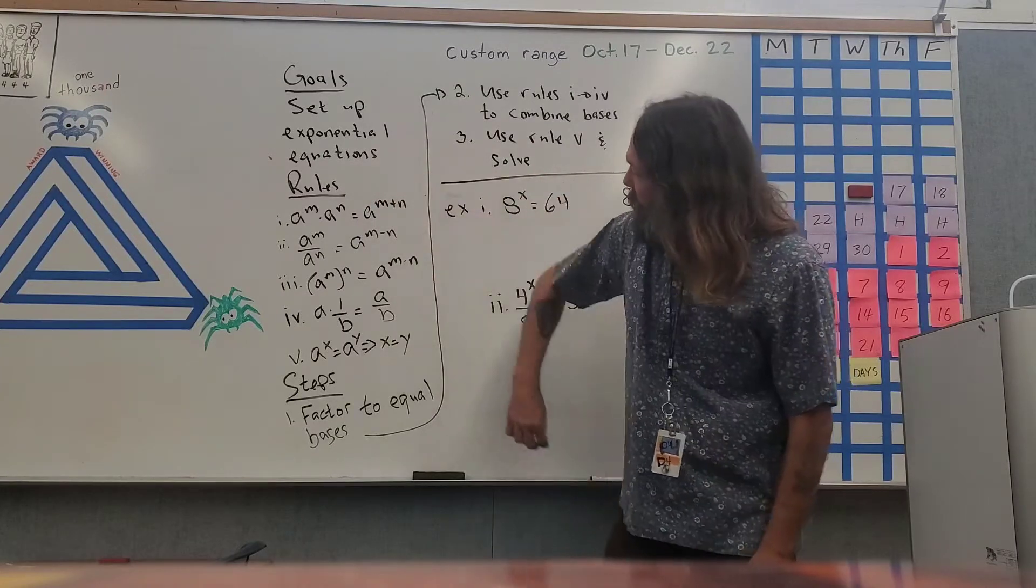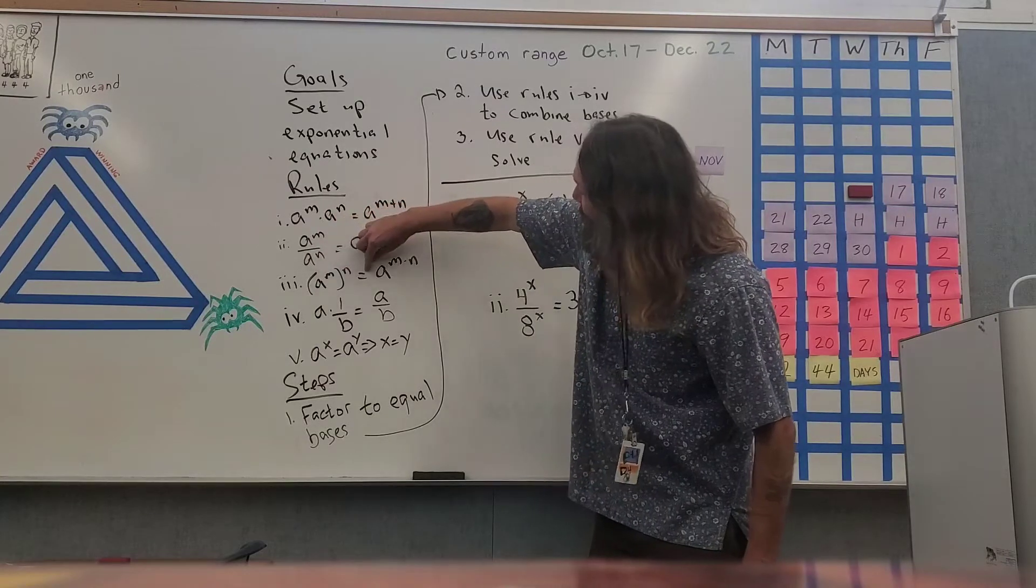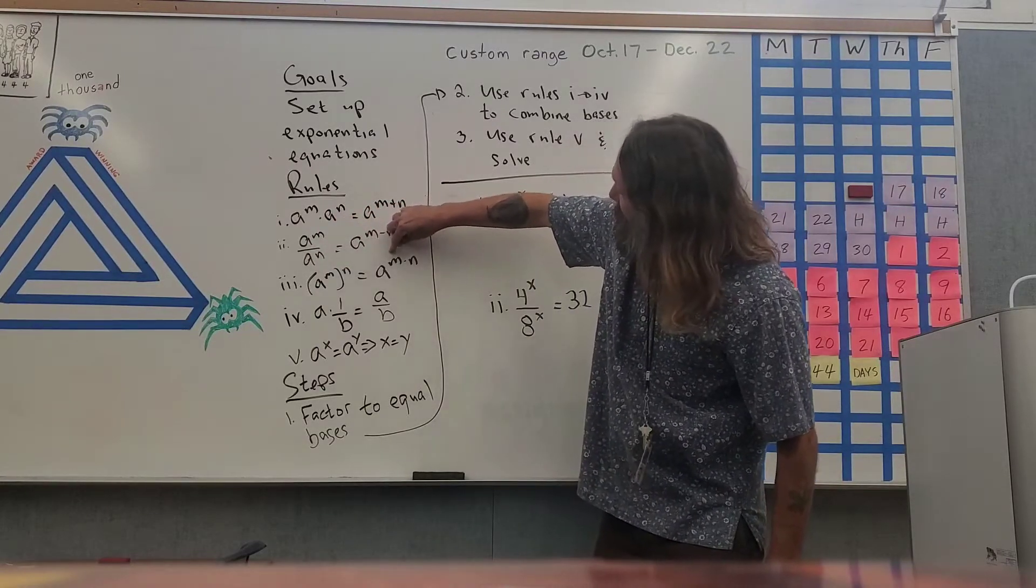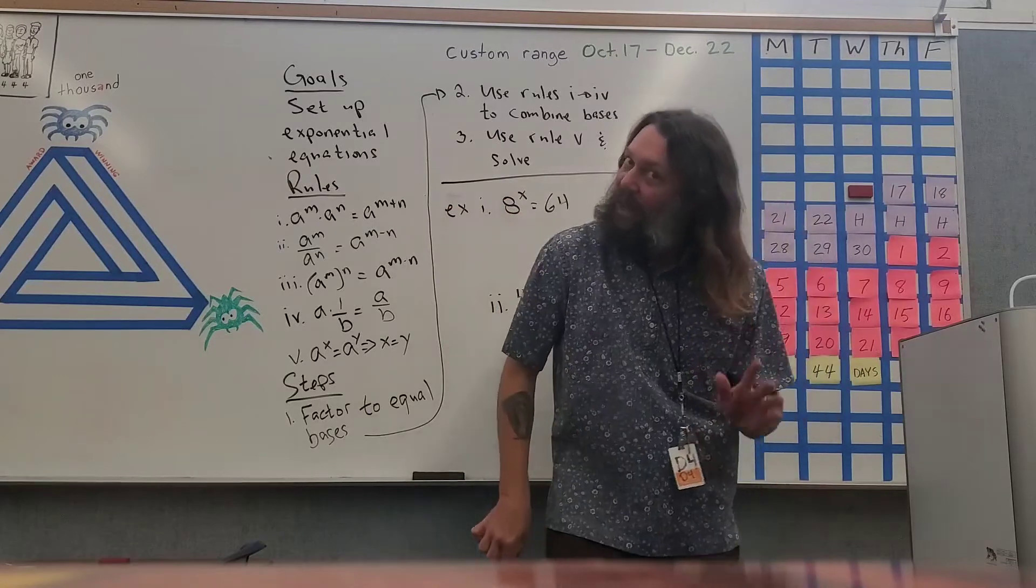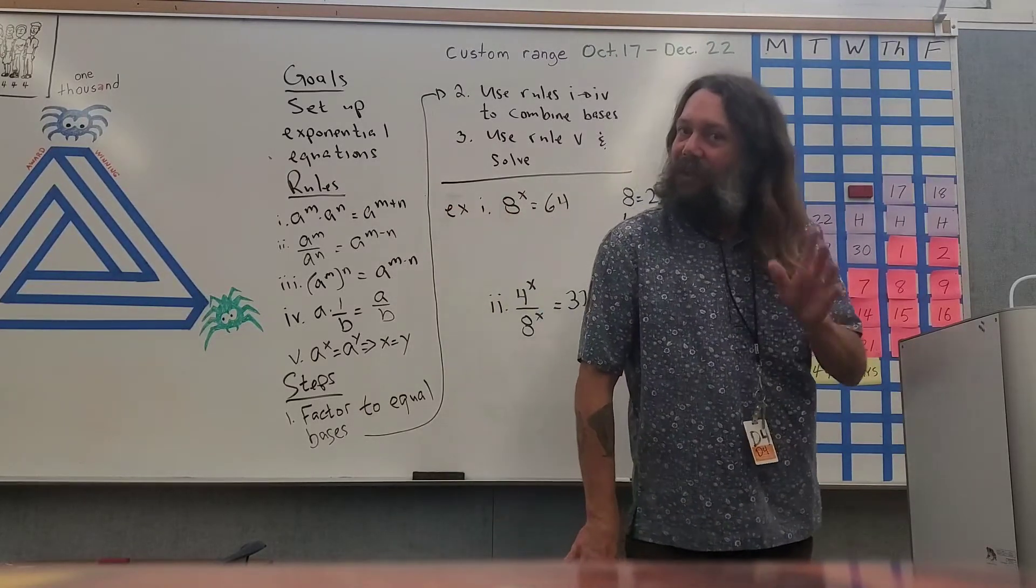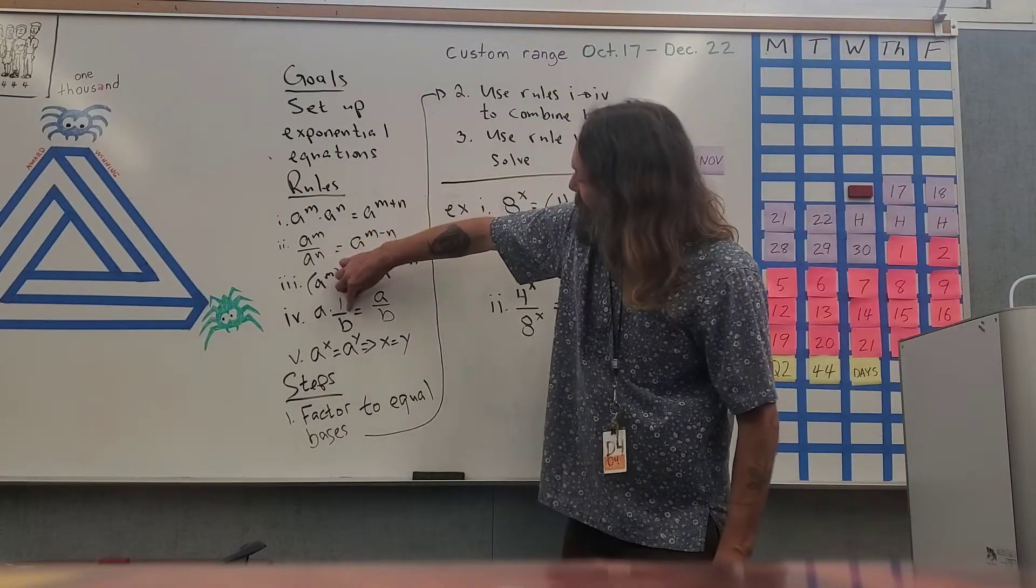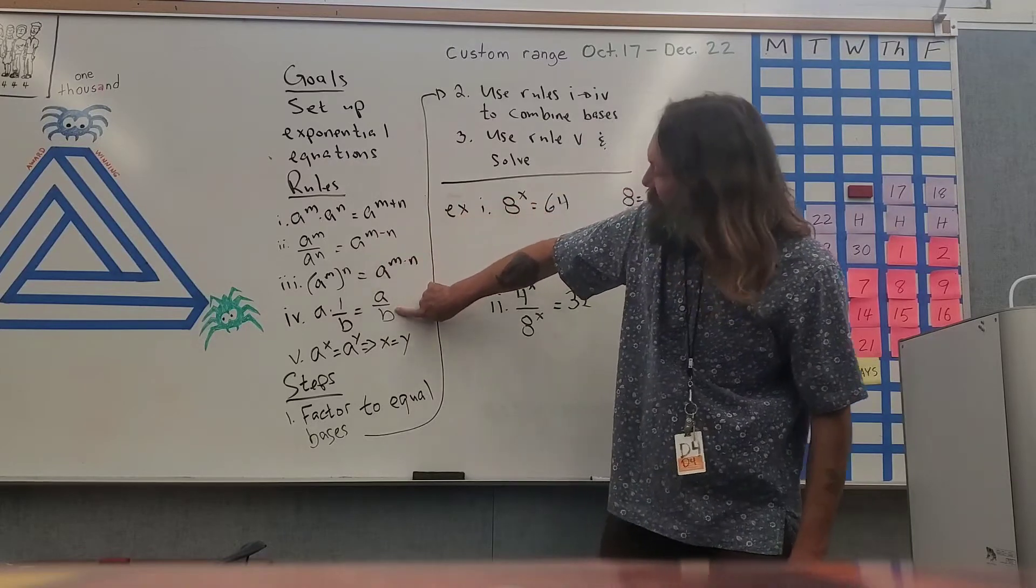Our third rule is going to be a to the m power raised to the n power, and that's equal to a to the power m times n. And our last rule, which I'm not going to do on this one, but you potentially could have problems like this in your assignment, would be a number times a fraction, and that is equal to that number divided by that denominator.